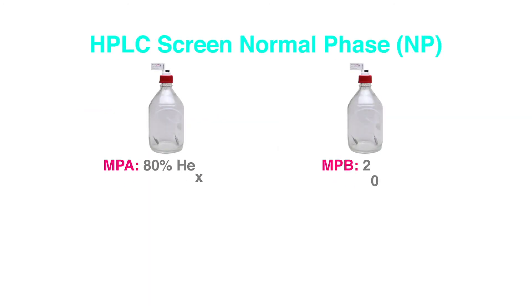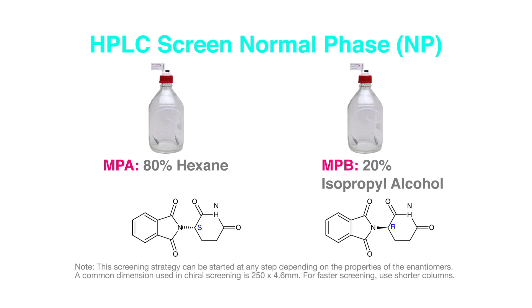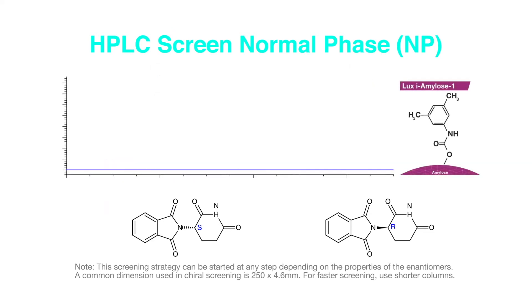80% hexane and 20% isopropyl alcohol is a common normal phase screening condition. If not using an immobilized phase chiral column, then verify the column's solvent compatibility specifications.